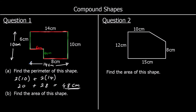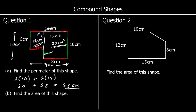Part B asks for the area. To find the area, we split it into two shapes — either horizontally or vertically. We have a 6 by 6 square and an 8 by 10 rectangle. The area of a rectangle is length times width: 10 times 8 is 80 centimetres squared, and 6 times 6 is 36 centimetres squared. So the total area is 80 plus 36, which is 116 centimetres squared.